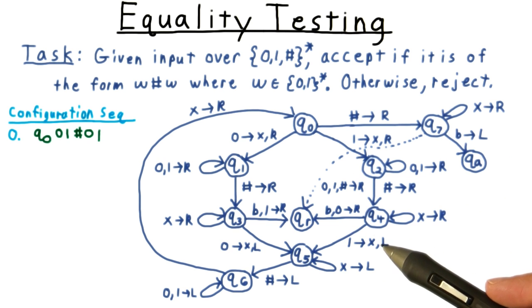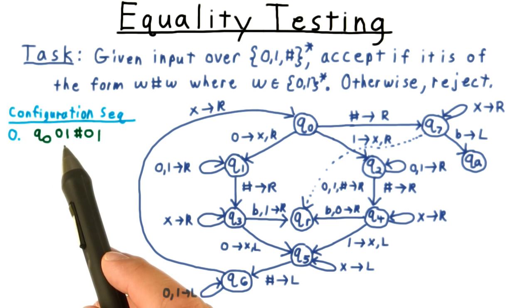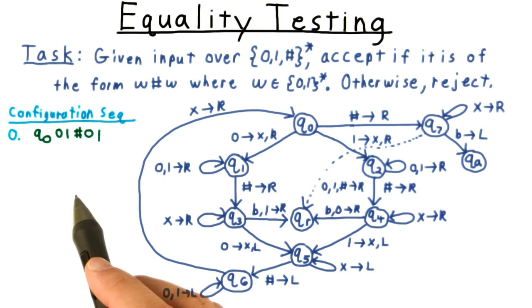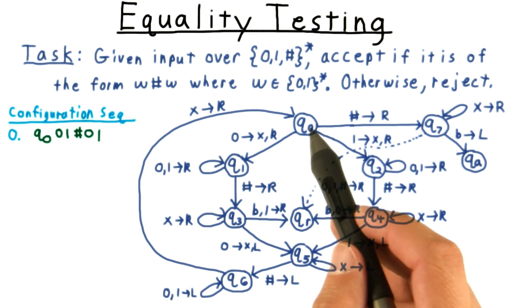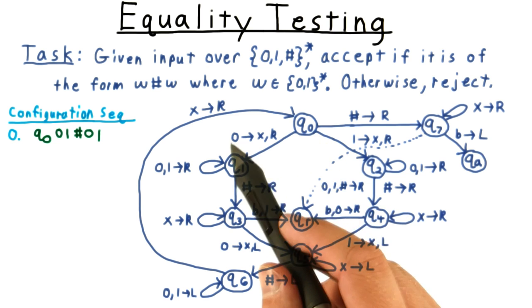It helps to trace through an example. We'll do this for the input 01 hash 01. Of course, we start in the initial state q0, and we read a 0.